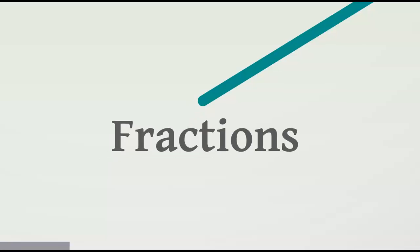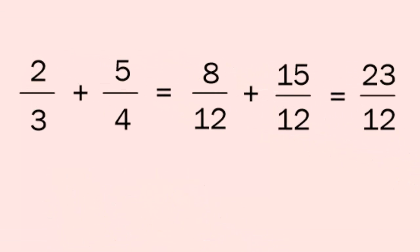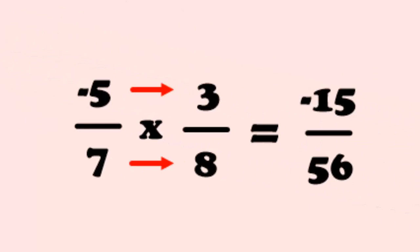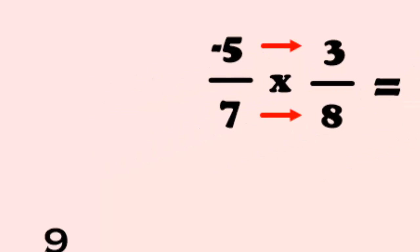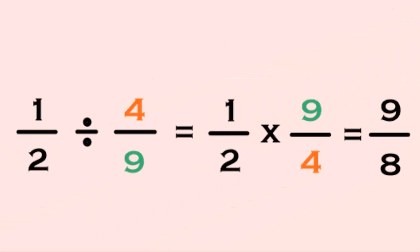Speaking of fractions, when adding fractions, we need to find a common denominator. Then add the numerators, but keep the denominator the same. When multiplying, multiply across. And when dividing, take the second fraction and flip it. Then it turns to a multiply question.